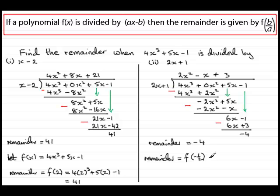So all I need to do now is just substitute -1/2 then into our expression here for f(x). So we're going to have 4 times (-1/2)³ + 5 times (-1/2) and then minus the 1. And if you work that out, you'll find you get the remainder of -4. And again, so much quicker.